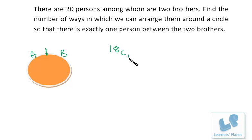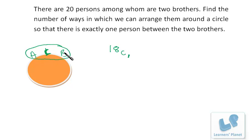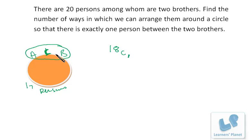We choose one person from 18 — that's 18C1. Suppose this person is C. Now we treat the combination A, C, B as a single unit. Apart from this unit, 17 more persons remain. So we arrange 18 entities (17 persons + 1 combined unit) around a circle, which gives 17! ways.